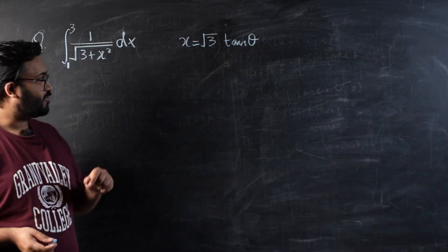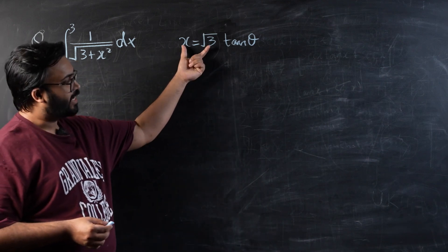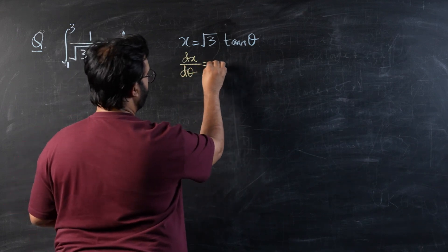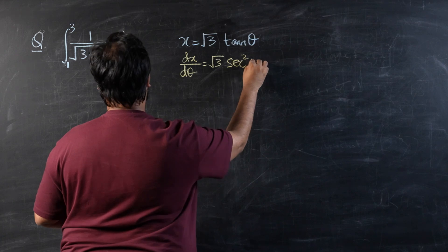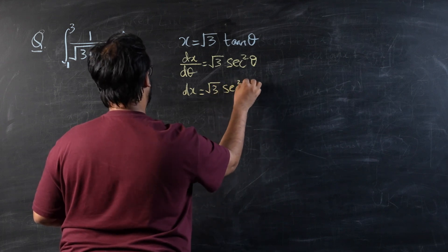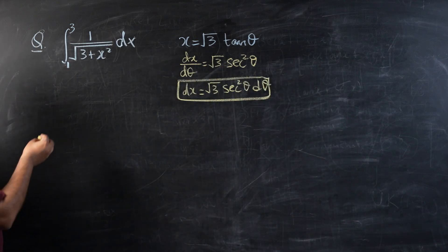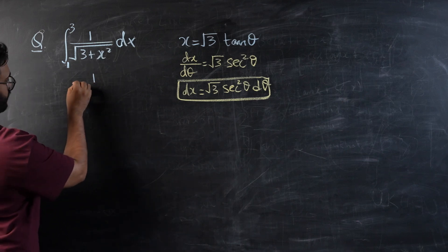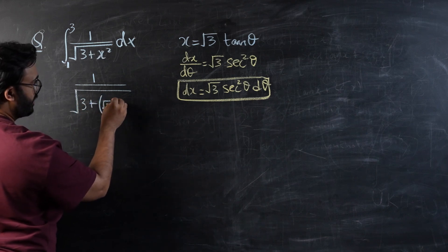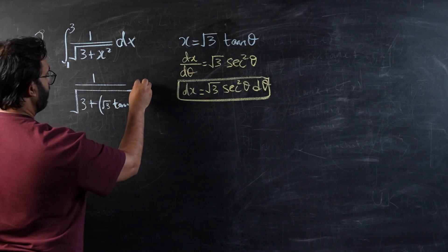Now let's move on to the second part: integration by substitution. The first step for any integration by substitution is to differentiate the substitution. Here, dx/dθ equals √3 sec² θ, so dx equals √3 sec² θ dθ. Now we substitute these values into the integral, giving 1 over (√3 + (√3 tan θ)²) with dx replaced by √3 sec² θ dθ.